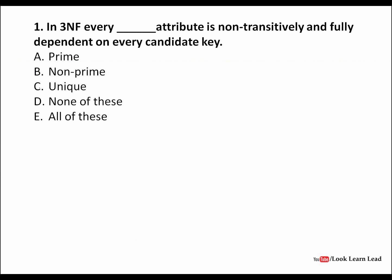First question: in every 3NF — third normal form — every non-prime attribute is fully functionally dependent on the primary key, which is 2NF. And every non-prime attribute is non-transitively and fully functionally dependent on the candidate key, which is 3NF. So the answer is non-prime.